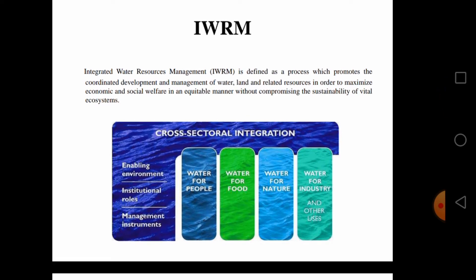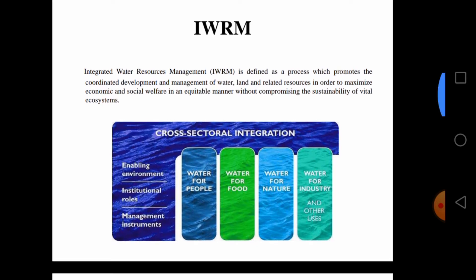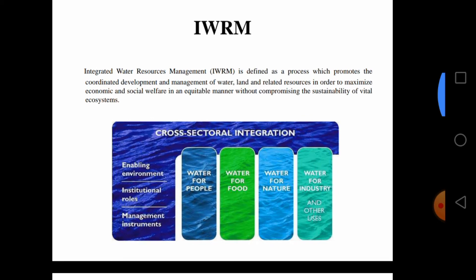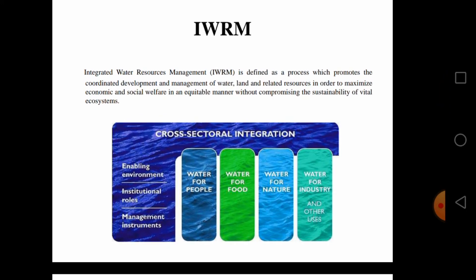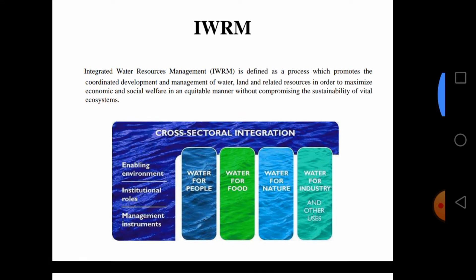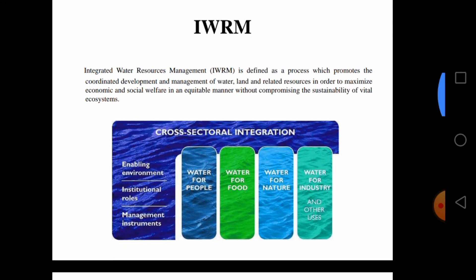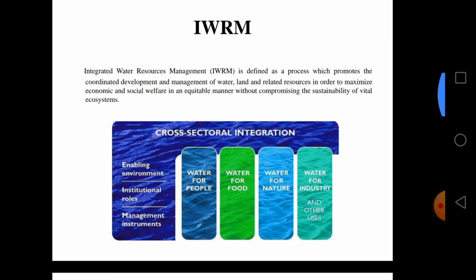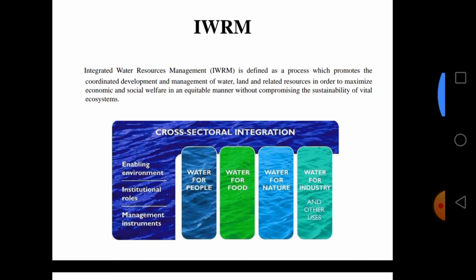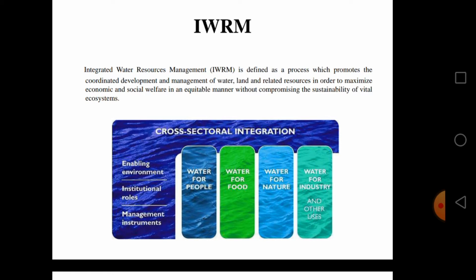Equitable manner means equality. In our systems, poor people are not getting proper water while rich people can buy anything — that is not equality. So water should be distributed in an equitable manner because water is not currently distributed properly. That is also one important point. Without compromising the sustainability of vital ecosystems — ecosystems are very important in this system. They are considered in the sustainability of vital ecosystems.